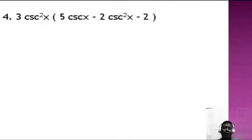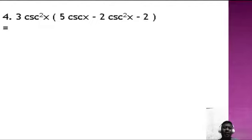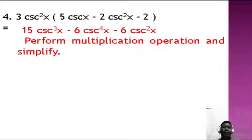Number four: 3 cosecant squared x times the quantity 5 cosecant x minus 2 cosecant squared x minus 2. Applying the distributive property and the product rule of the laws of exponents: 3 times 5 is 15 cosecant cubed x, minus 6 cosecant to the 4th x, minus 6 cosecant squared x.